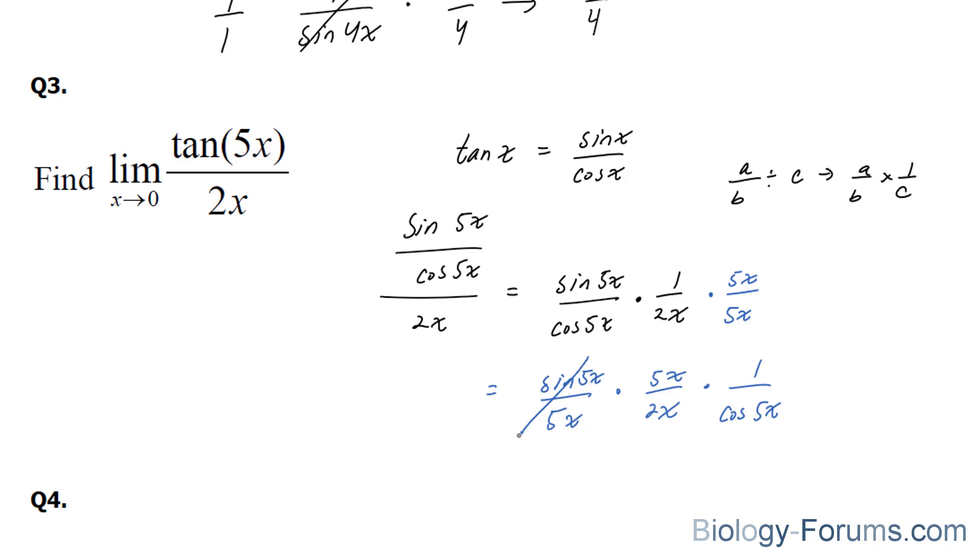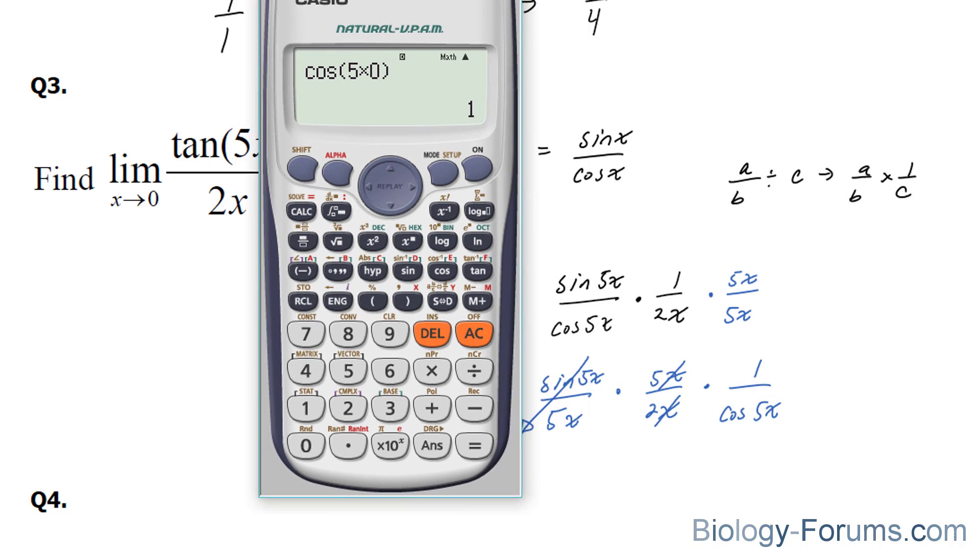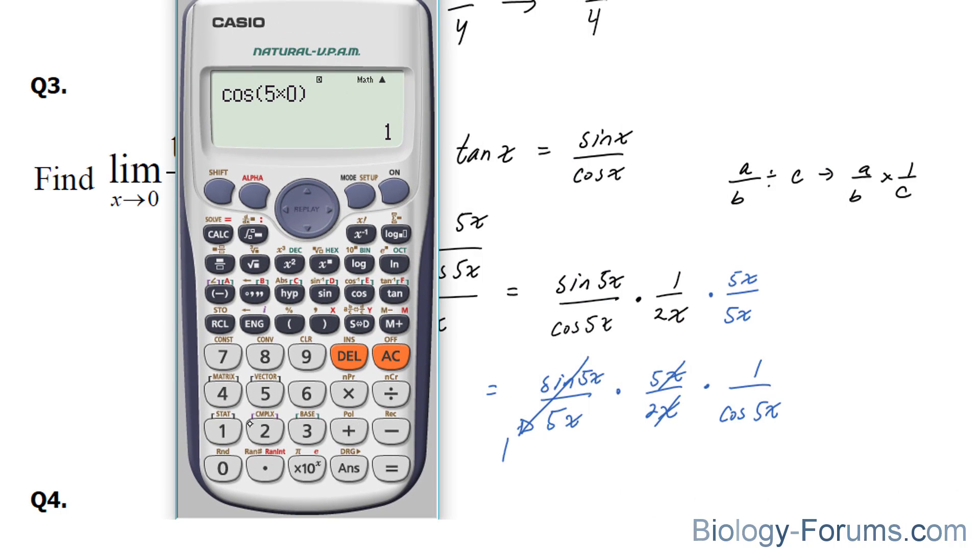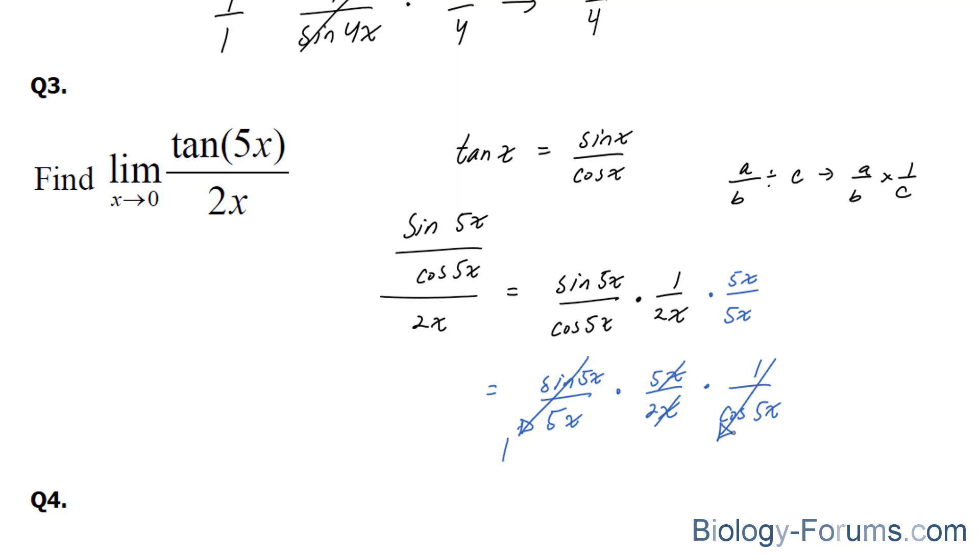We know this will go to 1. The 2x's here will cancel out. And if we were to use our calculator, cosine 5 times 0 would end up with 1, so this would actually go to 1. That being said, our limit for this function is 5 over 2.